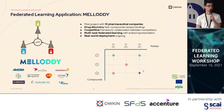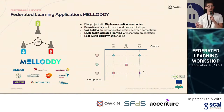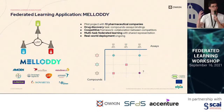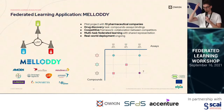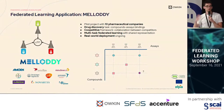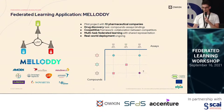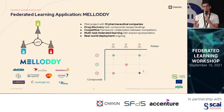The first real-world application is called Melody. This is a pilot project with 10 different pharmaceutical companies. The goal is to train a model for drug discovery tasks. Each pharmaceutical company has amassed data on different chemical compounds, and they have done assays measuring chemical properties — for instance, the ways they bind to potential targets. Each pharma may have focused on a different target area, and it would be great if we could pool these datasets.